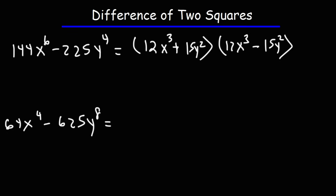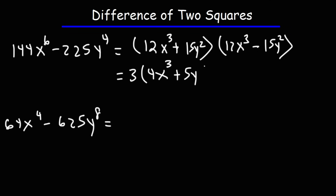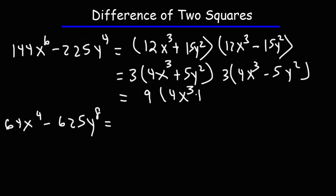Now we can't take the square root of x cubed because this is an odd exponent — dividing by 2 won't give us a whole number. So we can't use the difference of squares technique again. However, 12 and 15 have a GCF of 3. If we factor out 3 from each factor, we get 3 times 4x cubed plus 5y squared, and 3 times 4x cubed minus 5y squared. Multiplying the two 3's gives us 9. So our answer is 9 times 4x cubed plus 5y squared times 4x cubed minus 5y squared.